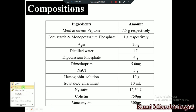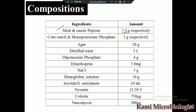Now we have the composition of this media. This media is composed of: meat casein peptone 7.5 g each, corn starch and monopotassium phosphate 1 g each, agar 20 g, distilled water 1 liter, dipotassium phosphate 4 g, trimethoprim 5.0 mg, NaCl 5 g, hemoglobin solution 10 g, Isovitalex enrichment 10 ml, nystatin 1250 units, colistin 7500 micrograms, and vancomycin 300 micrograms.